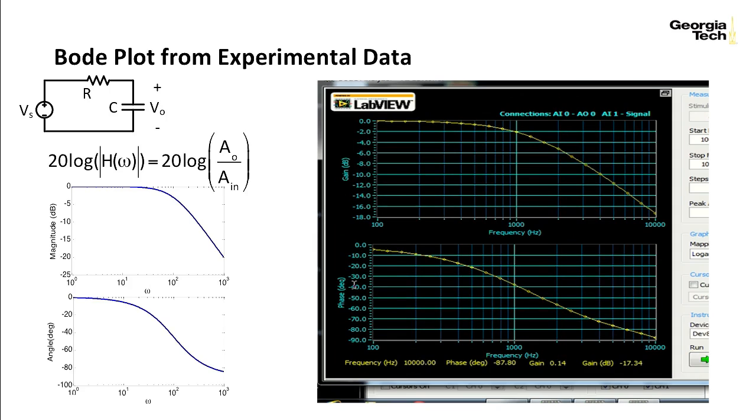This is gain in decibels, and it's a phase angle in degrees. Again, found numerically or found experimentally by looking at the angle difference between the input signal and the output signal. So this again is an automatic generation of the Bode plot experimentally without even having to worry about the explicit formula for H of omega.